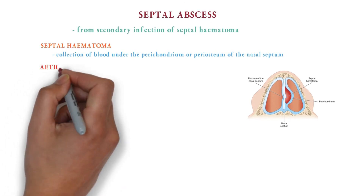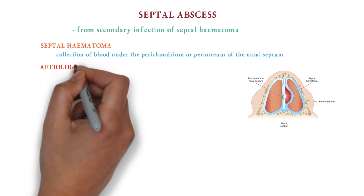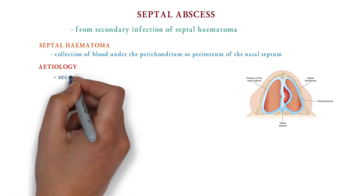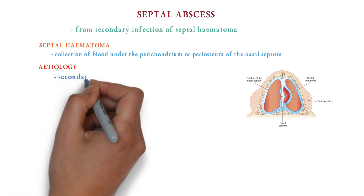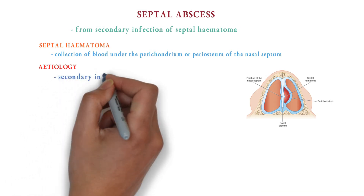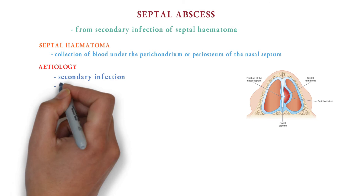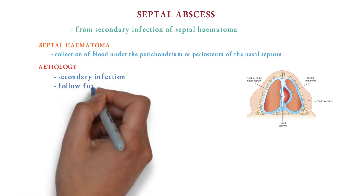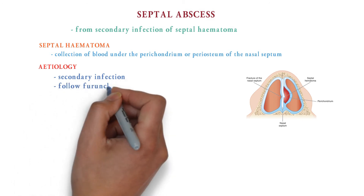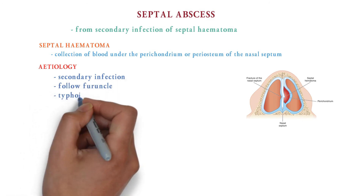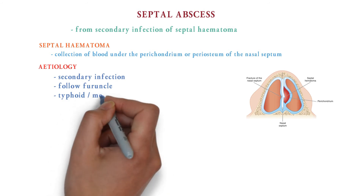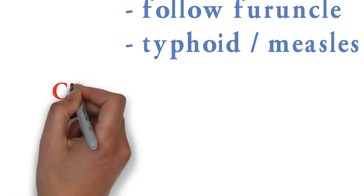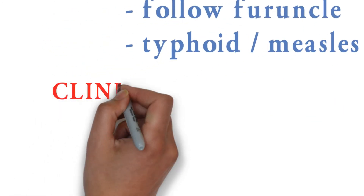The etiology behind septal abscess is due to secondary infection. Other probable causes include it can be followed after a foreign body, and infections like typhoid and measles can lead to formation of septal abscess.